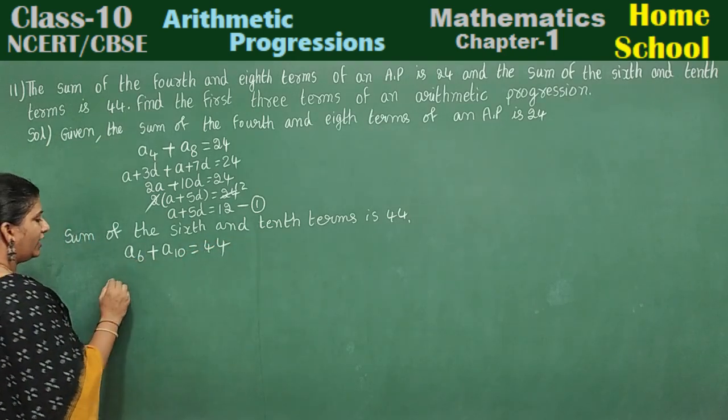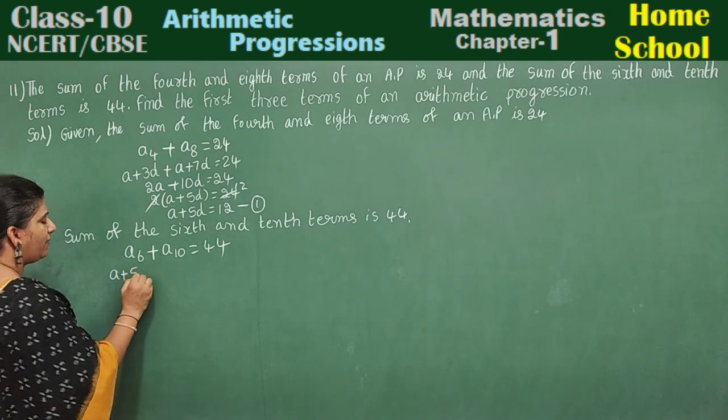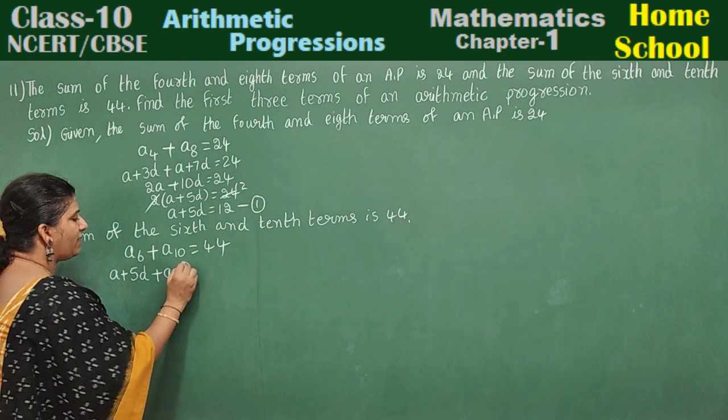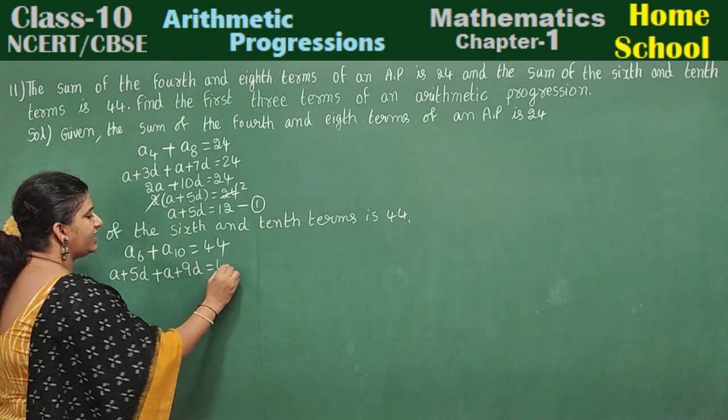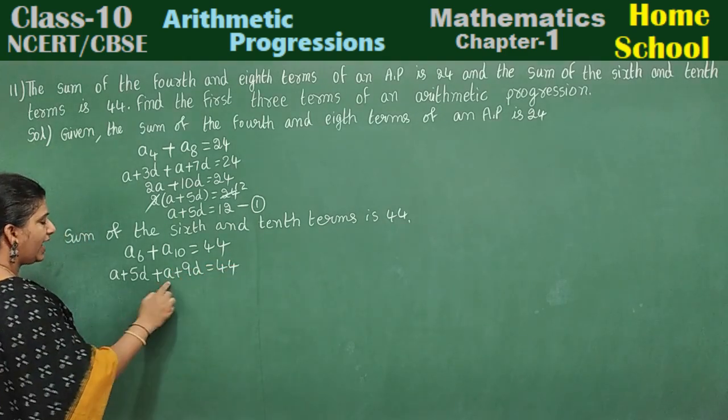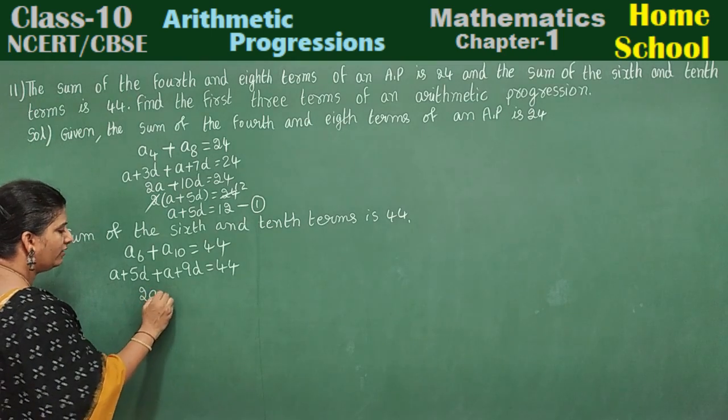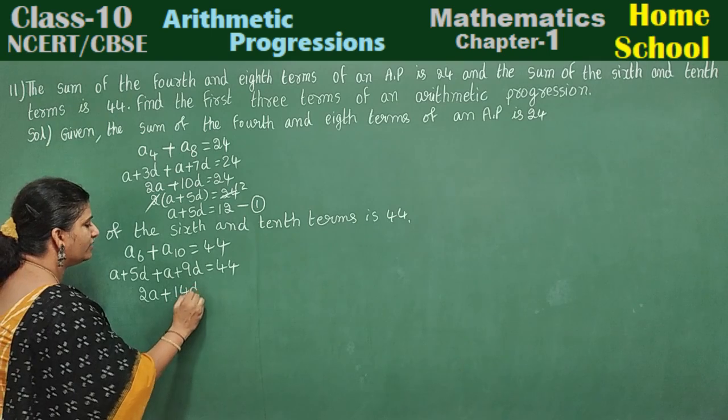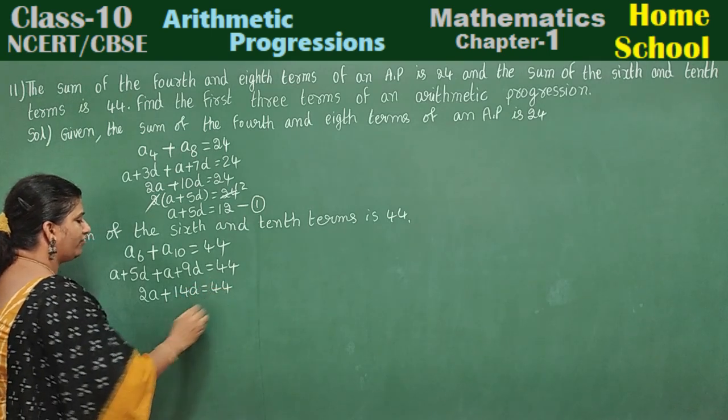Write it in general form. A6 can be written as A plus 5D. A10 can be written as A plus 9D equals 44. A plus A is 2A. 5D plus 9D is 14D equals 44.